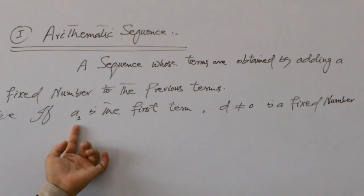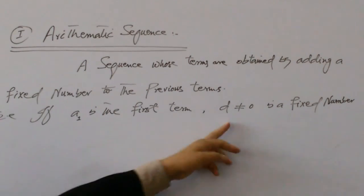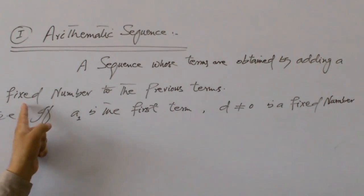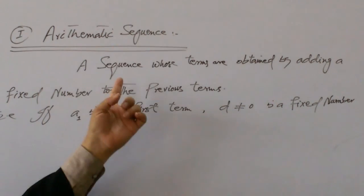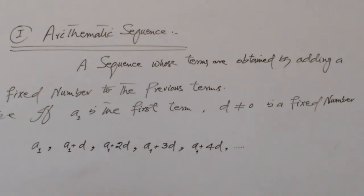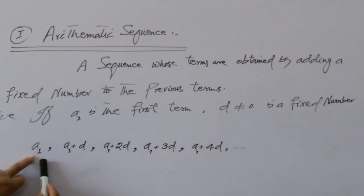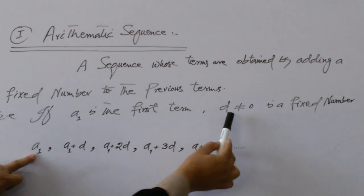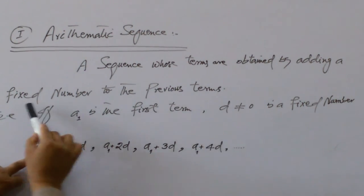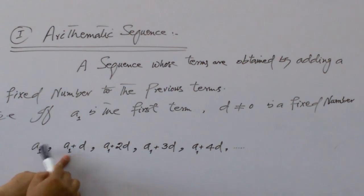That is, if A1 is the first term and D is the fixed number, then the arithmetic sequence can be calculated as follows. A1 is the first term, and when we add the fixed number D to it, we get the next term: A1 plus D.